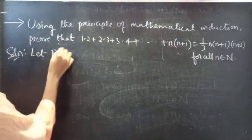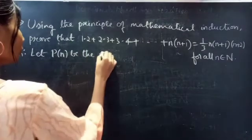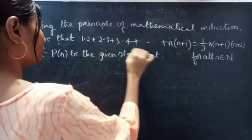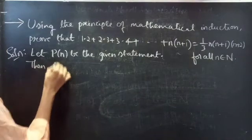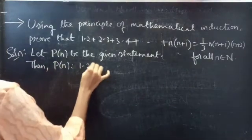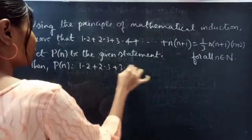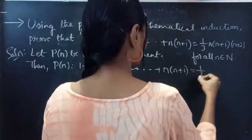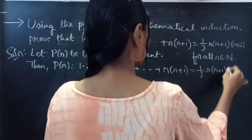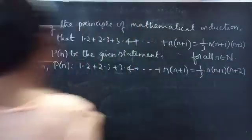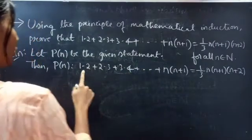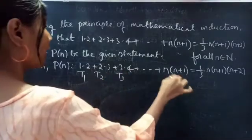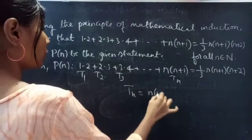Let P(n) be the given statement. Then P(n) is: 1·2 + 2·3 + 3·4 + ... + n(n+1) = (1/3)·n(n+1)(n+2). We are given the sum of n terms. Represent the first term by T1, second term by T2, third term by T3, and nth term by Tn. So the nth term is n(n+1).